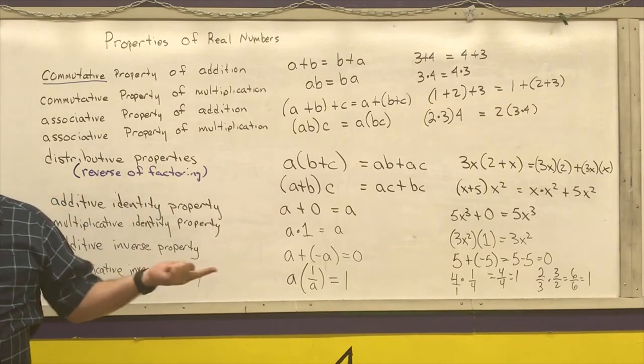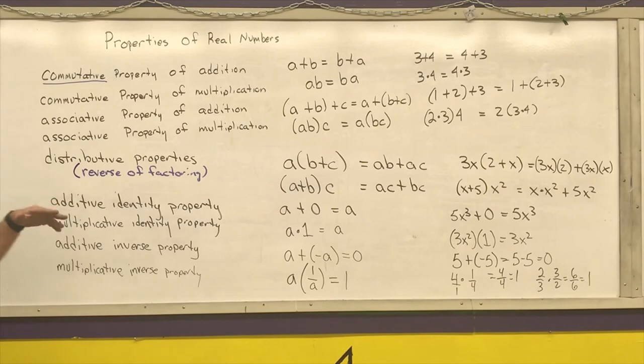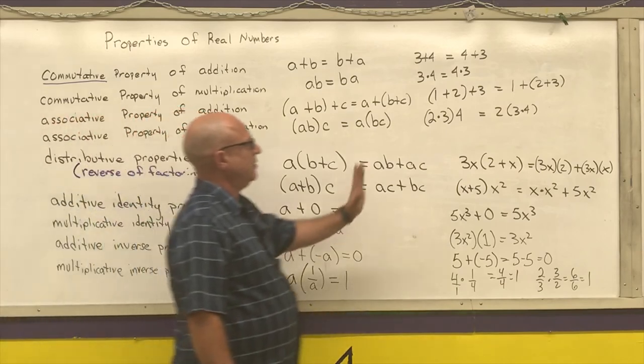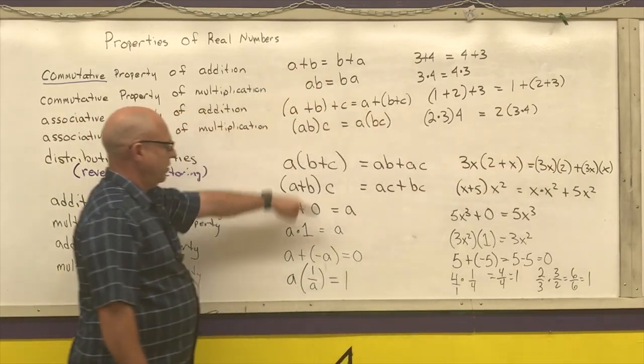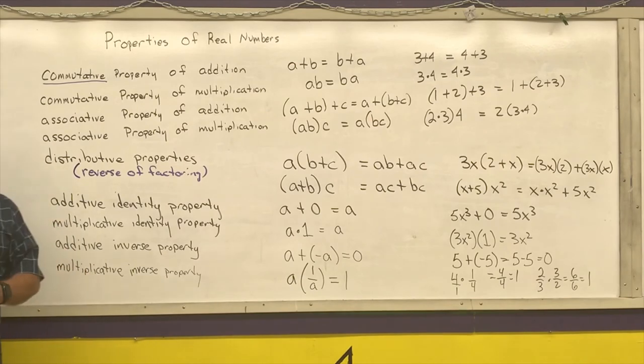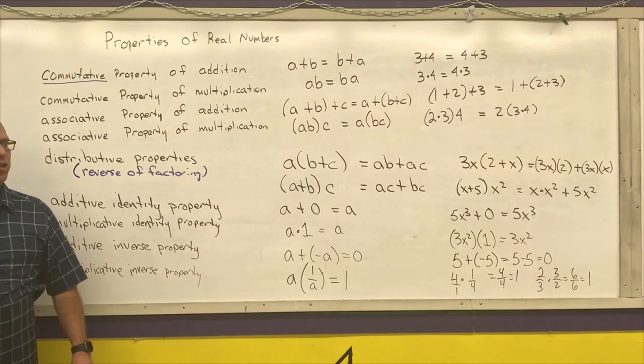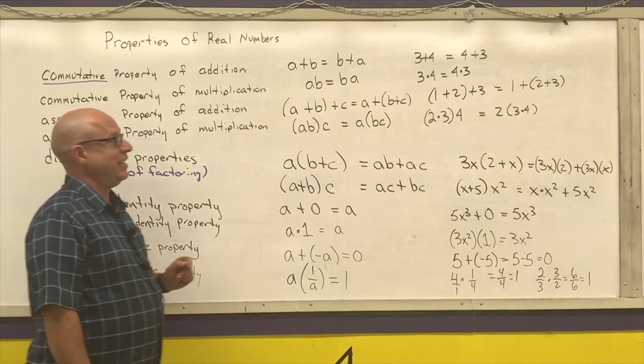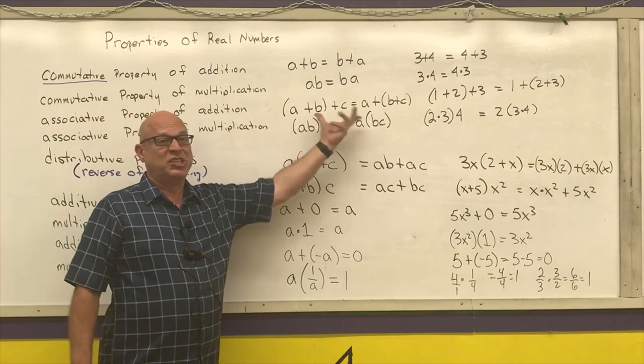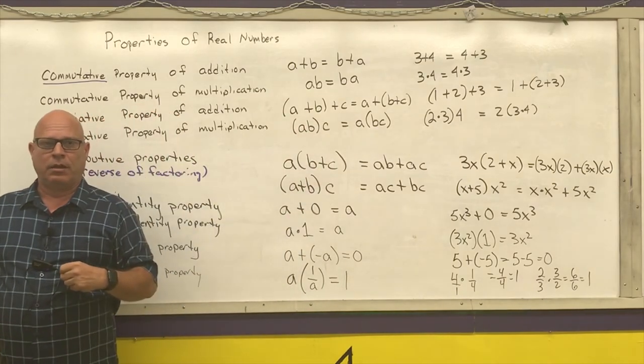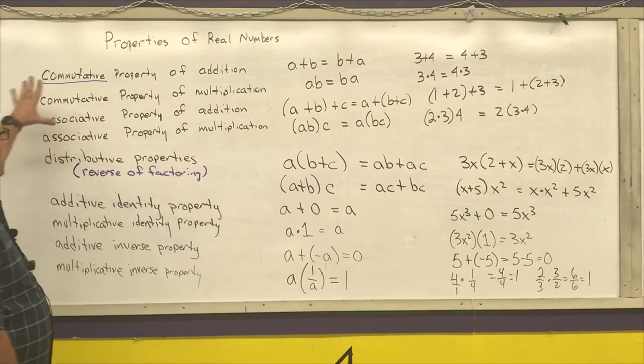If you are in 8th grade math, algebra 1, or geometry, you are given a page in your composition notebook that these need to be written on. You don't necessarily need to write out these examples on the right-hand side, but you do need to put those definitions in there, and that's so that you can use these. By the time you get to algebra 2, I expect you to really know them. I will tell you on your smarter balance test, you're going to be asked which property is being shown in various steps of work.